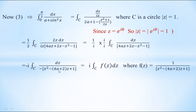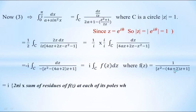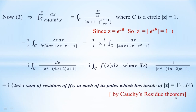Rearranging gives i times the contour integral over C of dz / [z² − (4a+2)z + 1]. Let this function be f(z), so f(z) = 1 / [z² − (4a+2)z + 1]. By Cauchy's residue theorem, the contour integral of f(z) dz equals 2πi times the sum of residues of f(z) at each pole lying inside the given circle |z| = 1. To apply this theorem, we first find the poles of f(z).